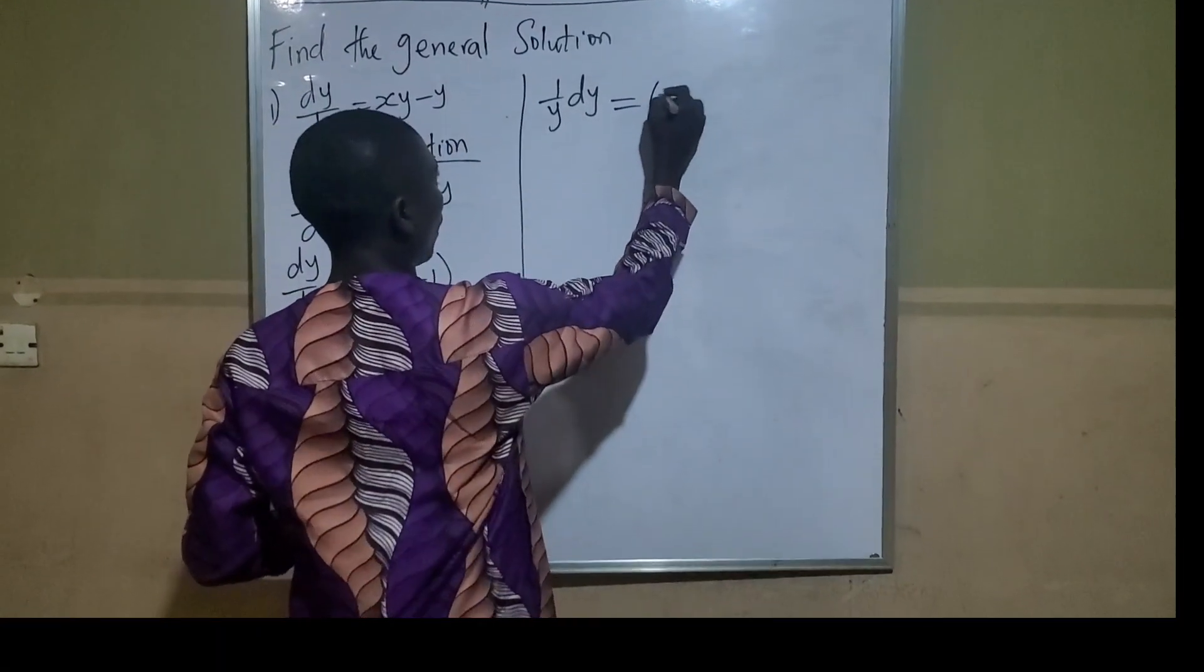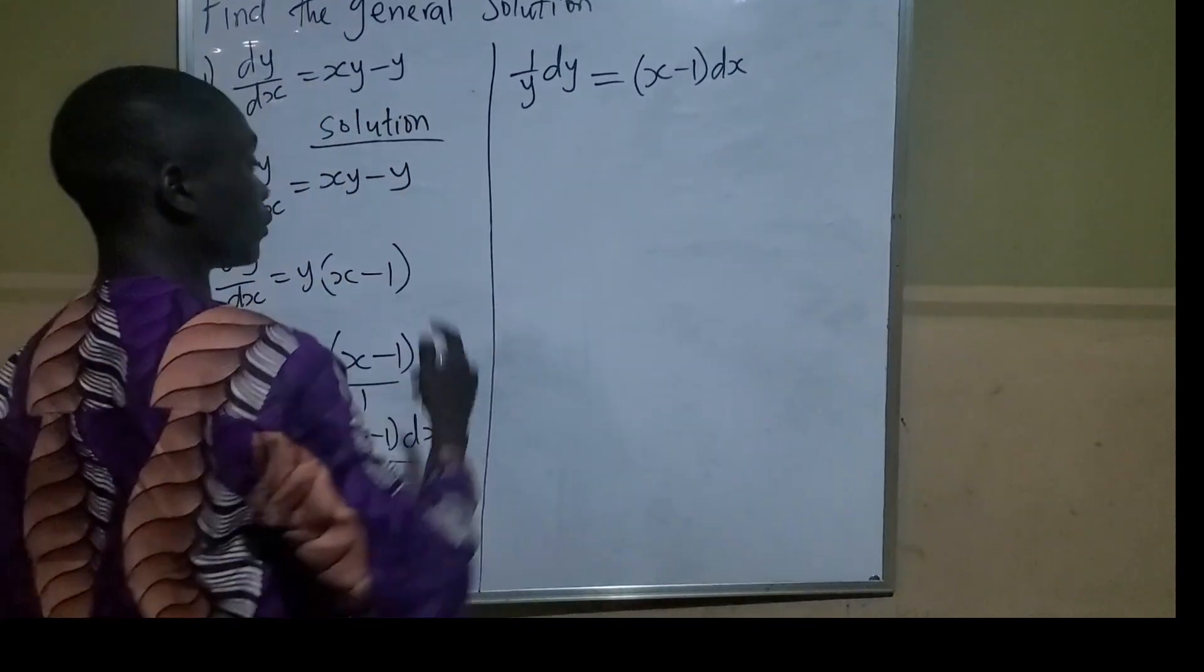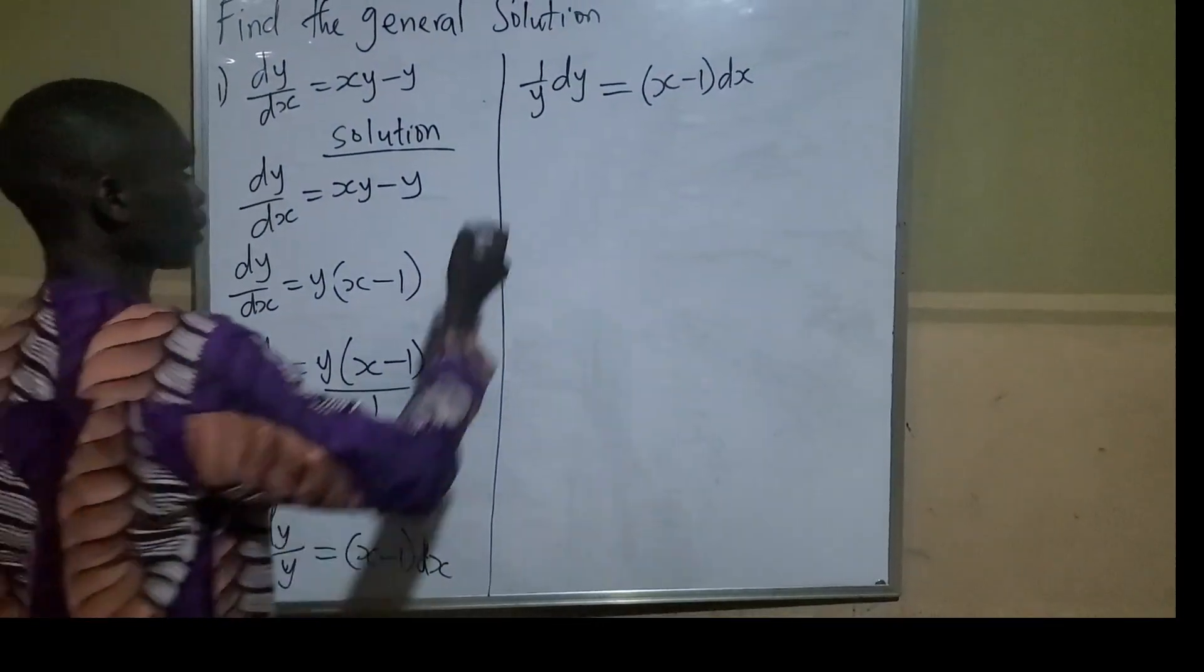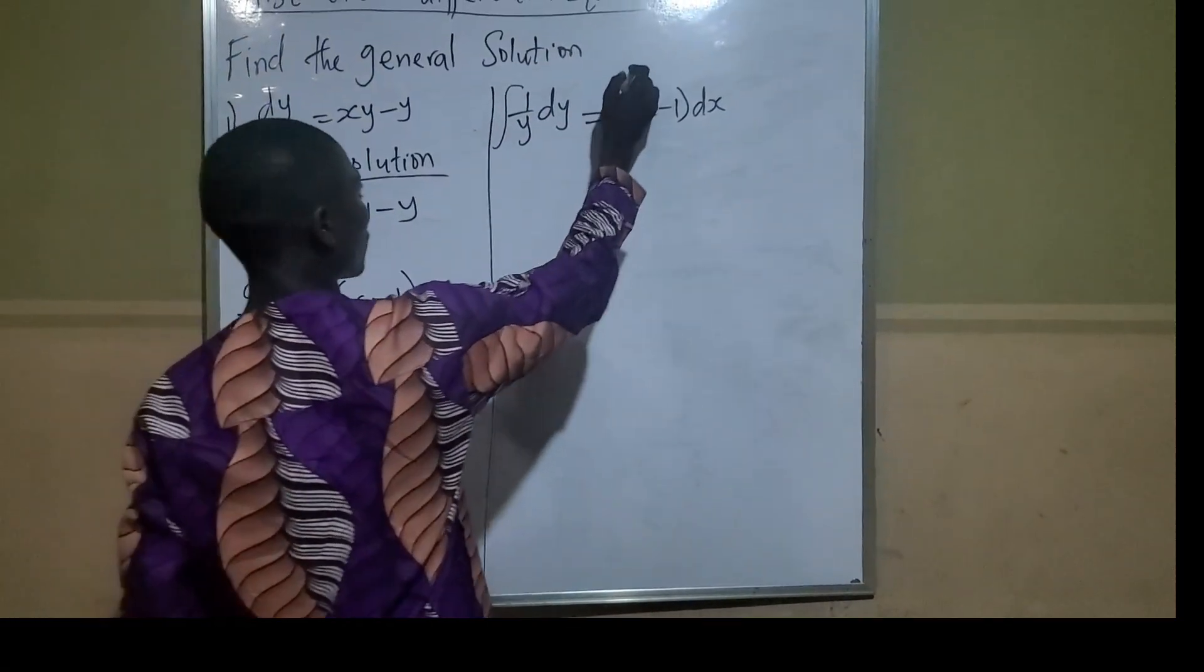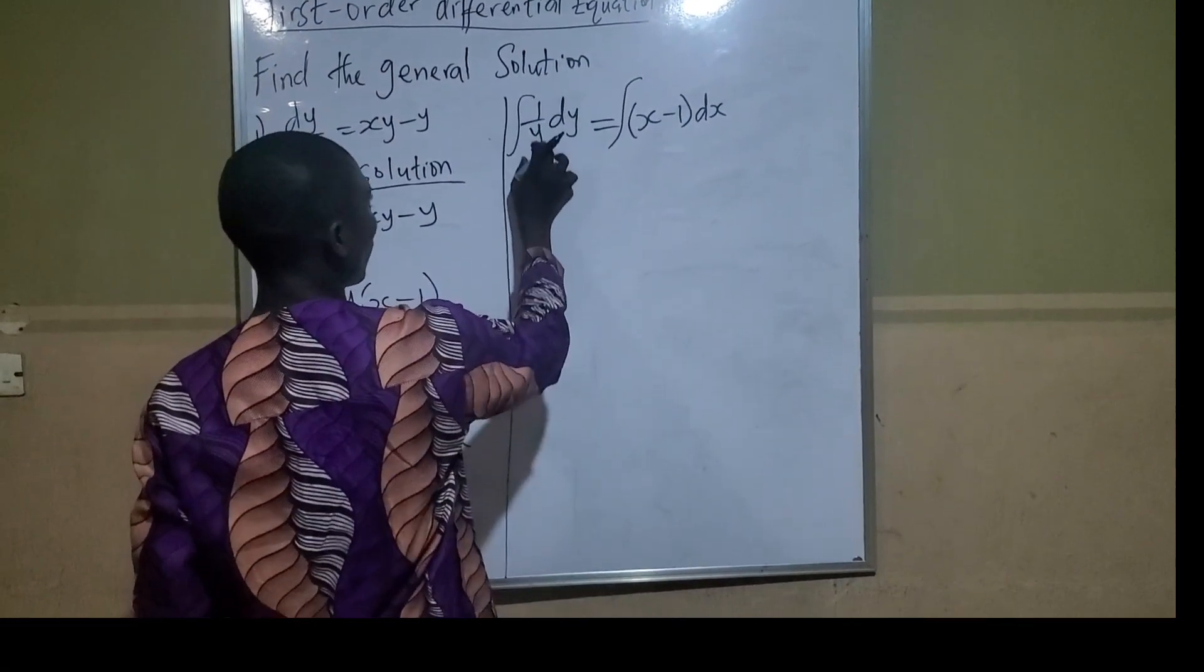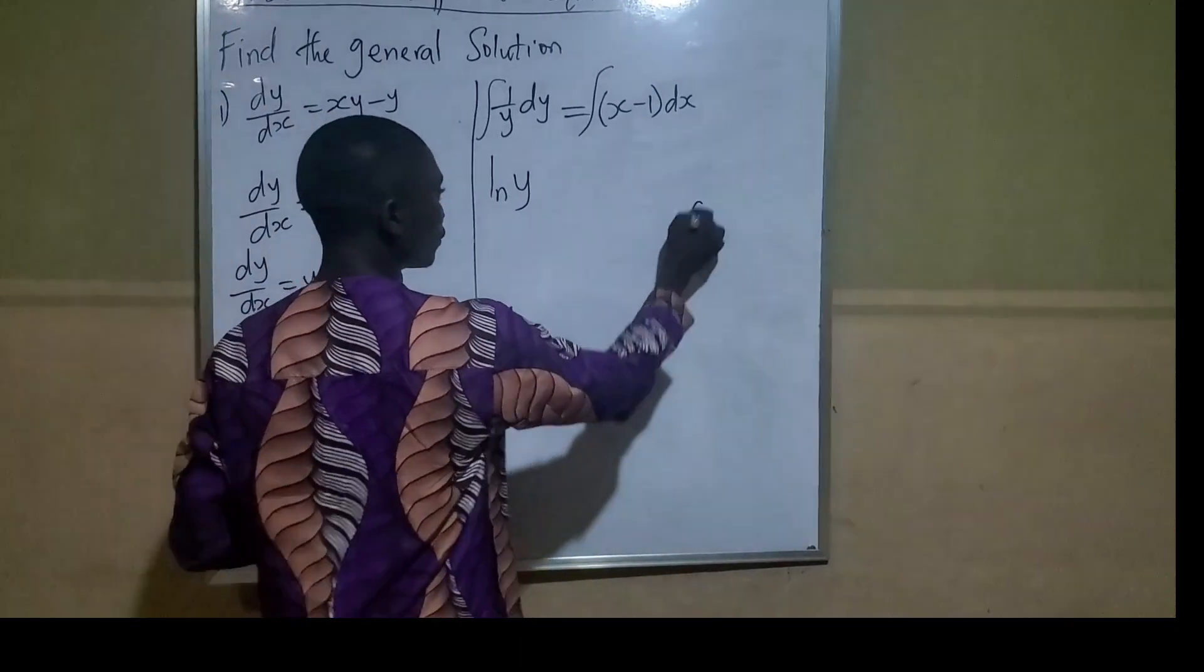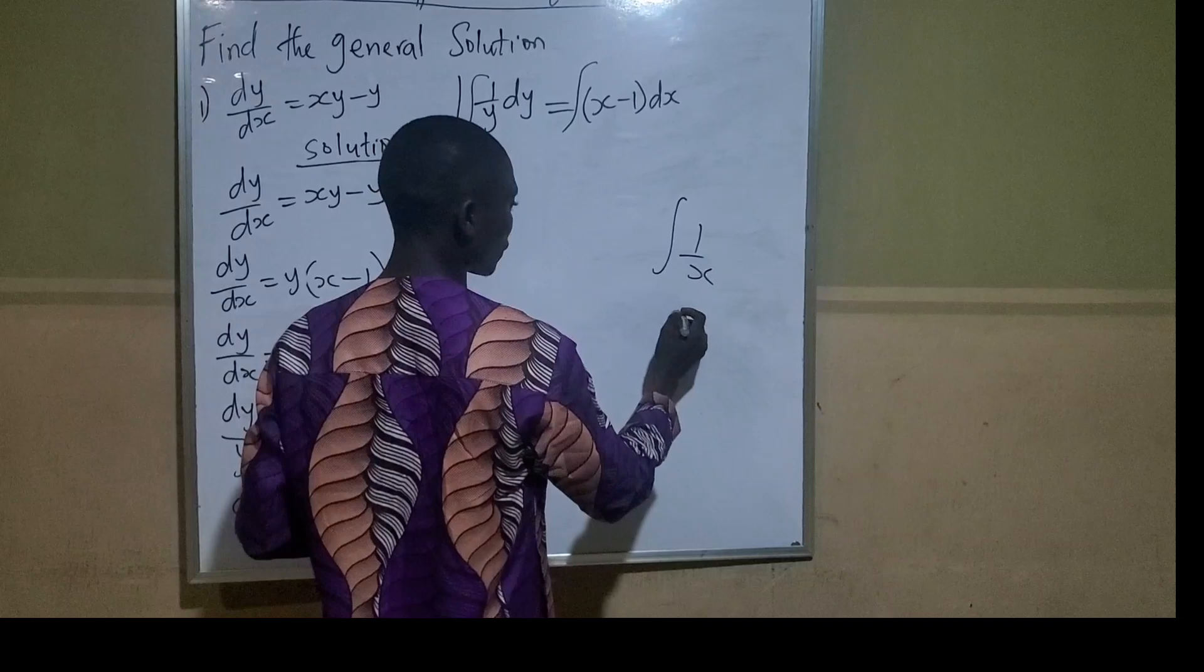The next thing is to take the integral of both sides. If I integrate 1/y with respect to y, it gives ln|y|. If you integrate 1/x, it gives ln|x|.